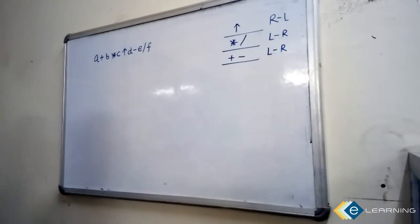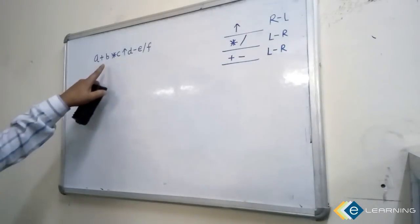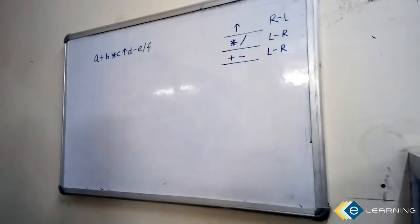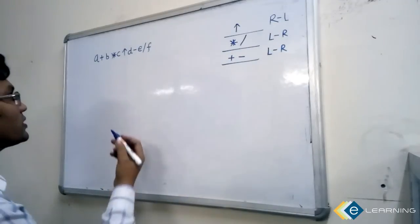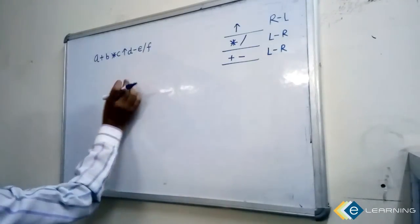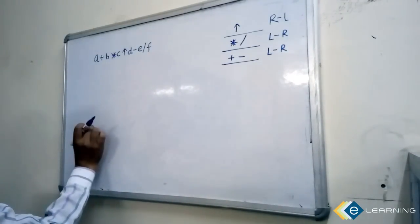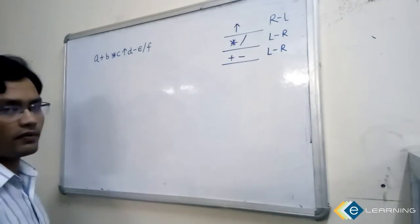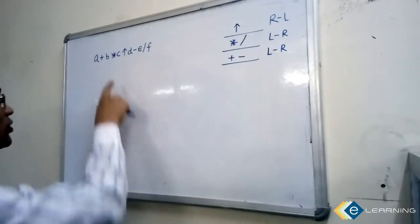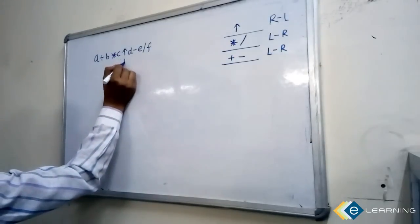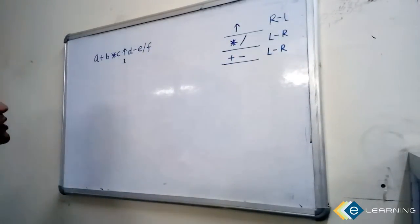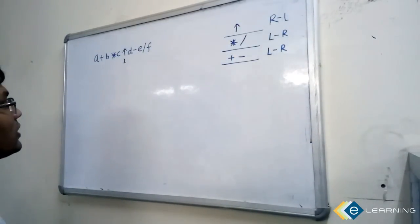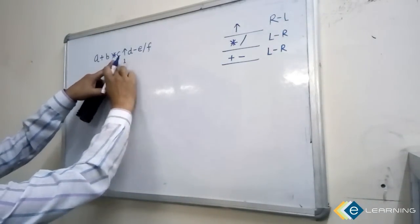Now number all the operators according to their precedence. The operator that evaluates first gets number one. Since power has the highest precedence, number the power operator first. Then star and divide have the same precedence — the operator evaluating second gets number two.